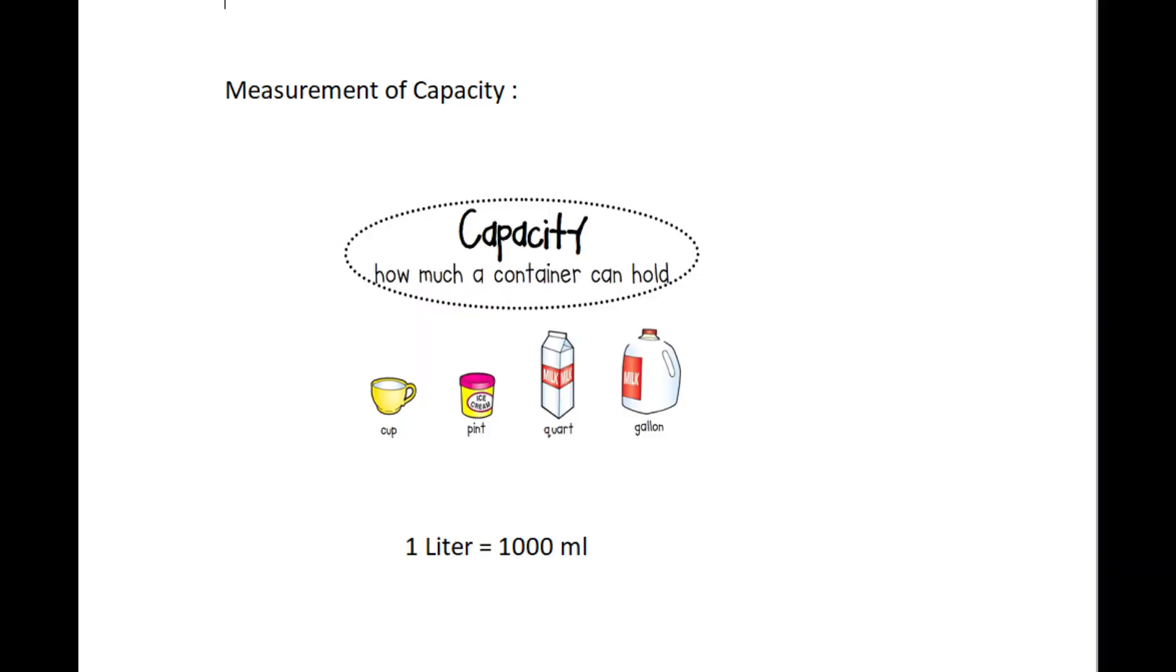Measurement of capacity. Capacity measures the quantity of liquid that an object holds. We use liter to measure larger quantities of liquid and milliliter to measure smaller quantities of liquid. 1 liter equals 1000 milliliters.